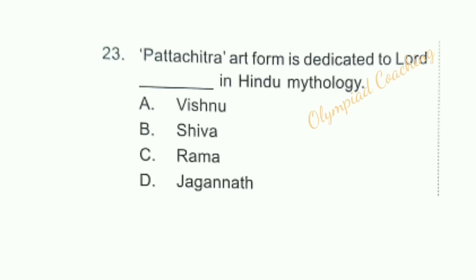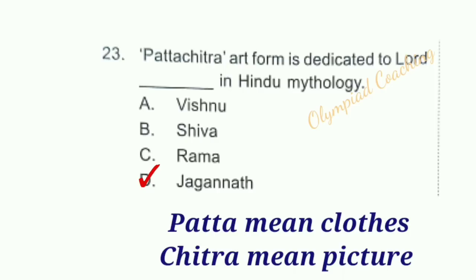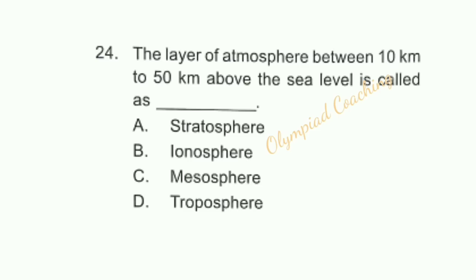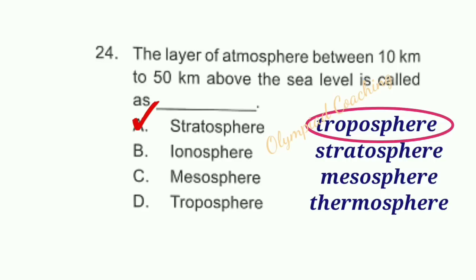Question number 23: Pata Chitra art form is dedicated to which Lord in Hindu mythology? Option D is correct. Pata means cloth and Chitra means picture. It is a traditional cloth-based scroll painting from eastern states of India like Odisha and West Bengal. Question number 24: The layer of atmosphere between 10 km to 50 km above sea level is called? Option A is correct — Stratosphere. The thermosphere is 85 km and above.